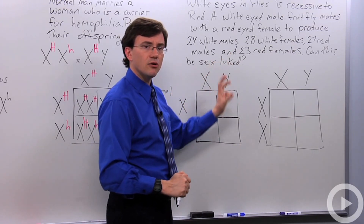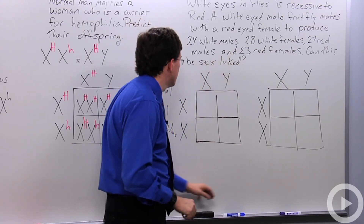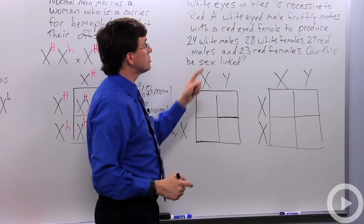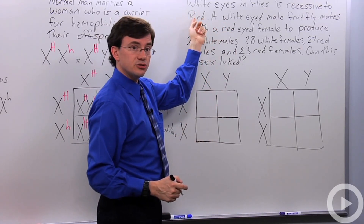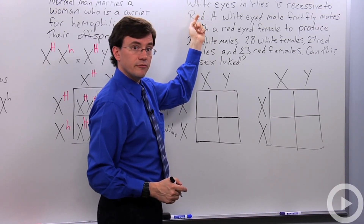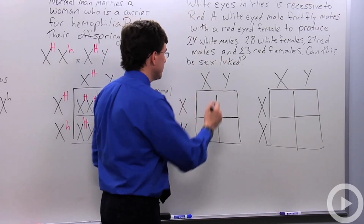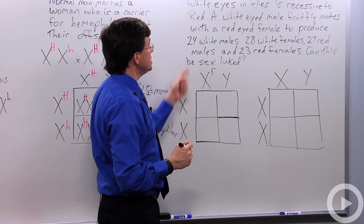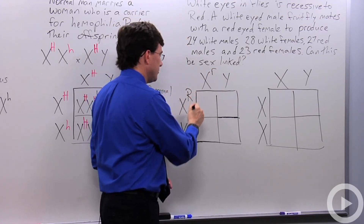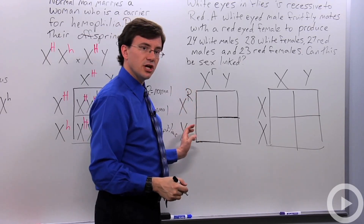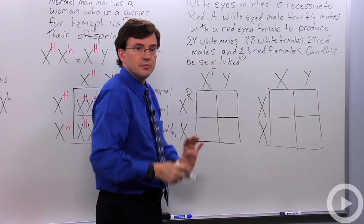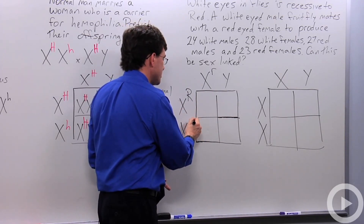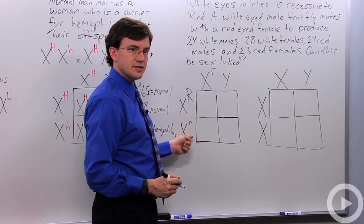Let me show you how to make this sex-linked. We have our white-eyed male. Because red is the dominant trait, I'll use big R for red and little r for white. So he's X^r. She's red — we know that. If she were homozygous dominant, all offspring would be red. So let's make her heterozygous: X^R X^r.